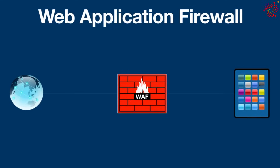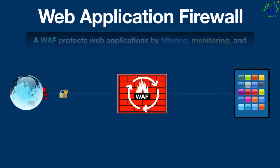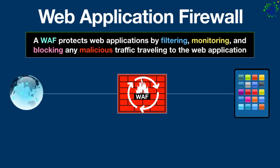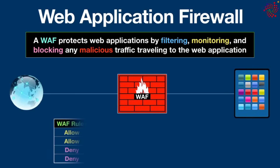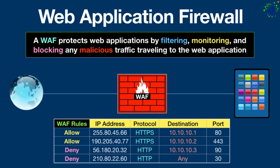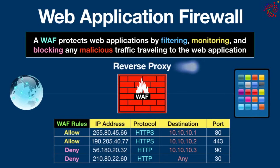Now let's see how a web application firewall works. A web application firewall protects web applications by filtering, monitoring, and blocking any malicious traffic traveling to the web application, and prevents any unauthorized data from leaving the app. It does this by following a set of rules, often called policies, that help determine what traffic is malicious and what traffic is safe. Just as a proxy server acts as an intermediary to protect the identity of a client, a web application firewall works in a similar fashion but in reverse —